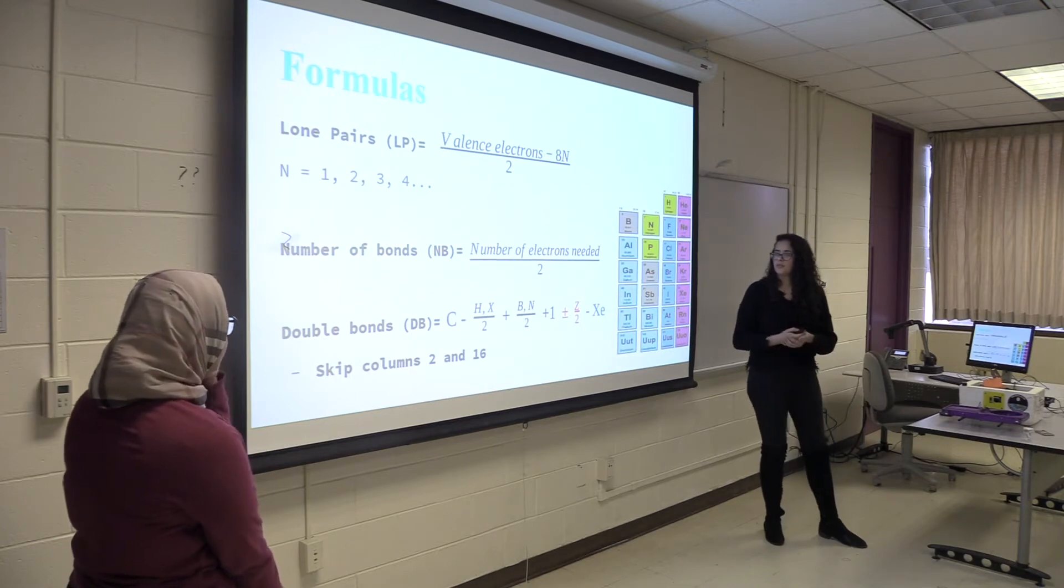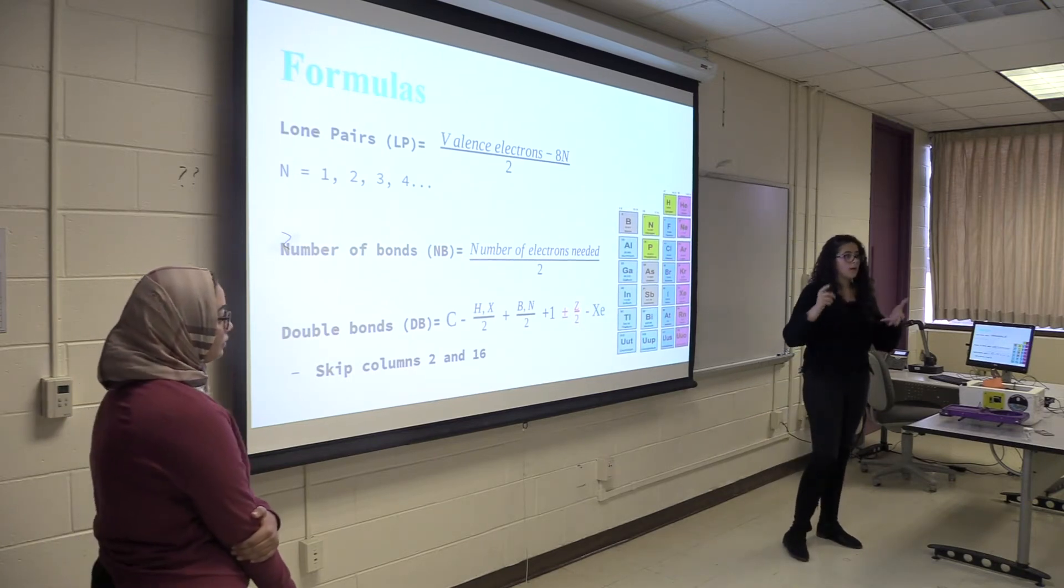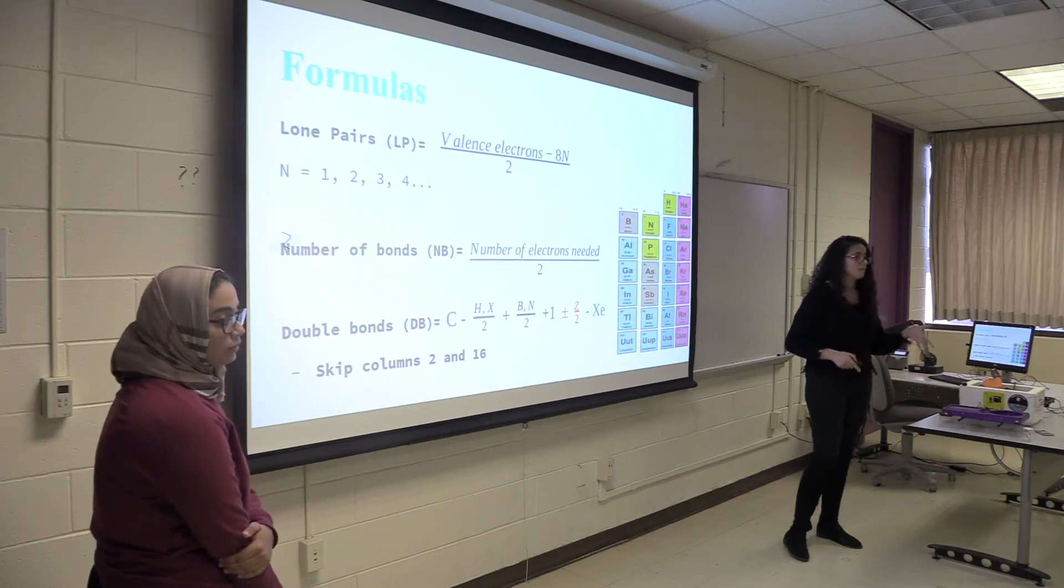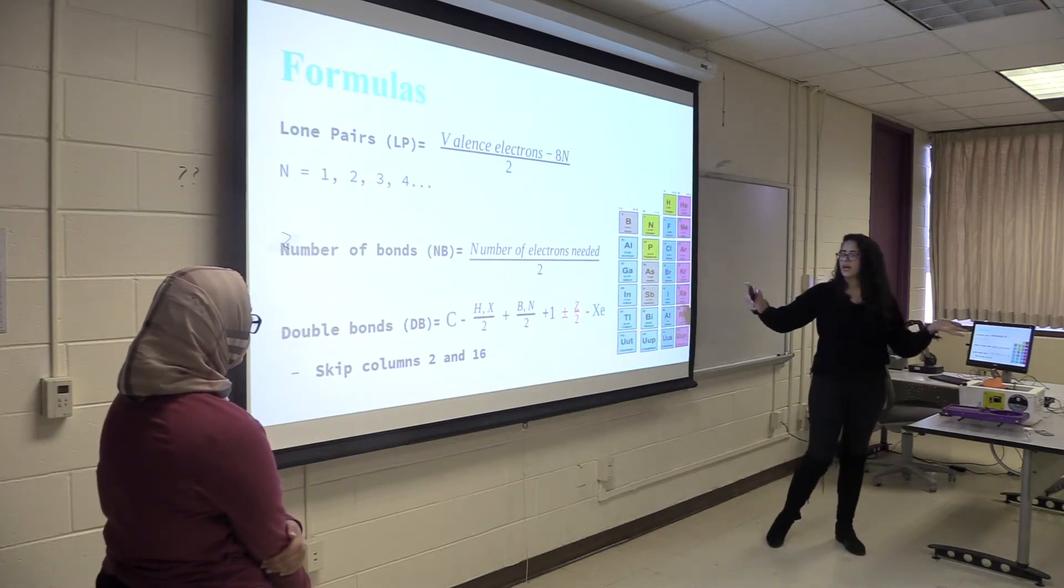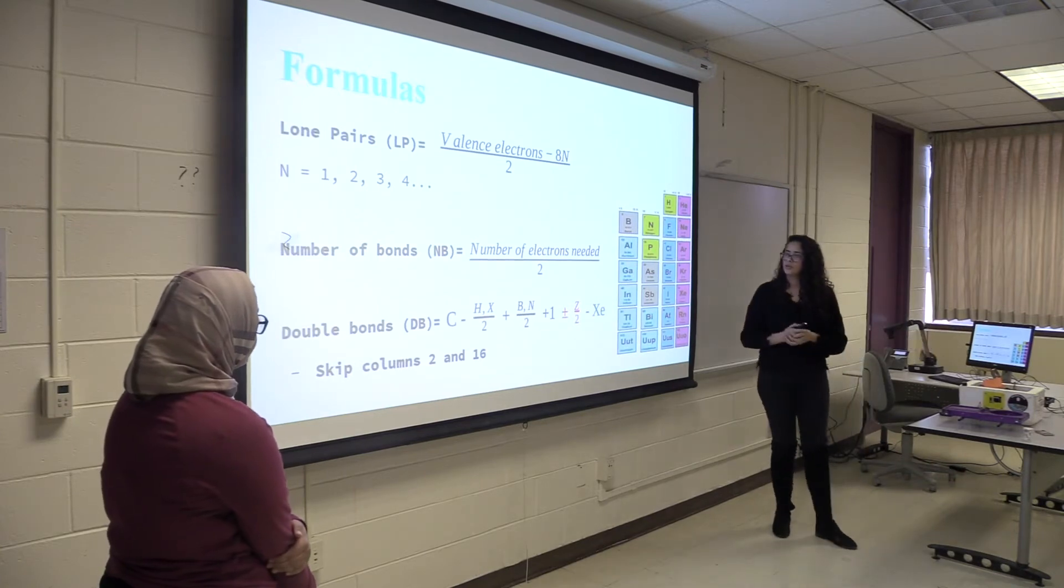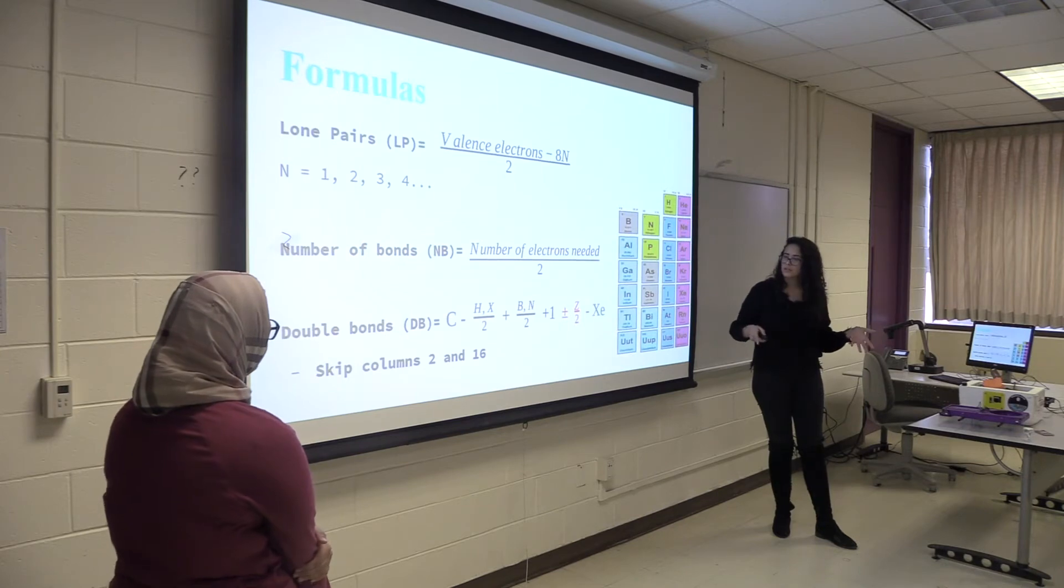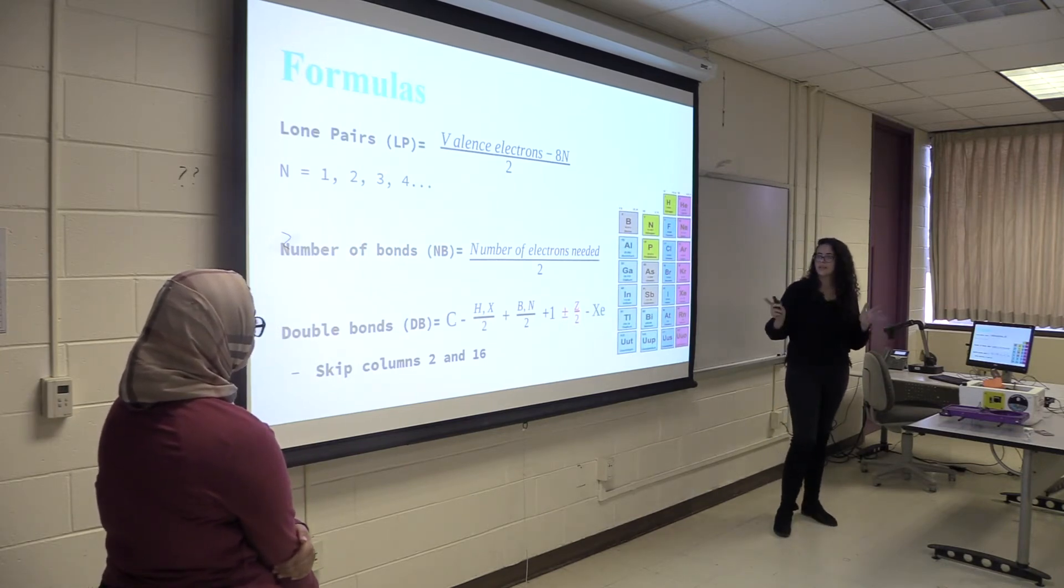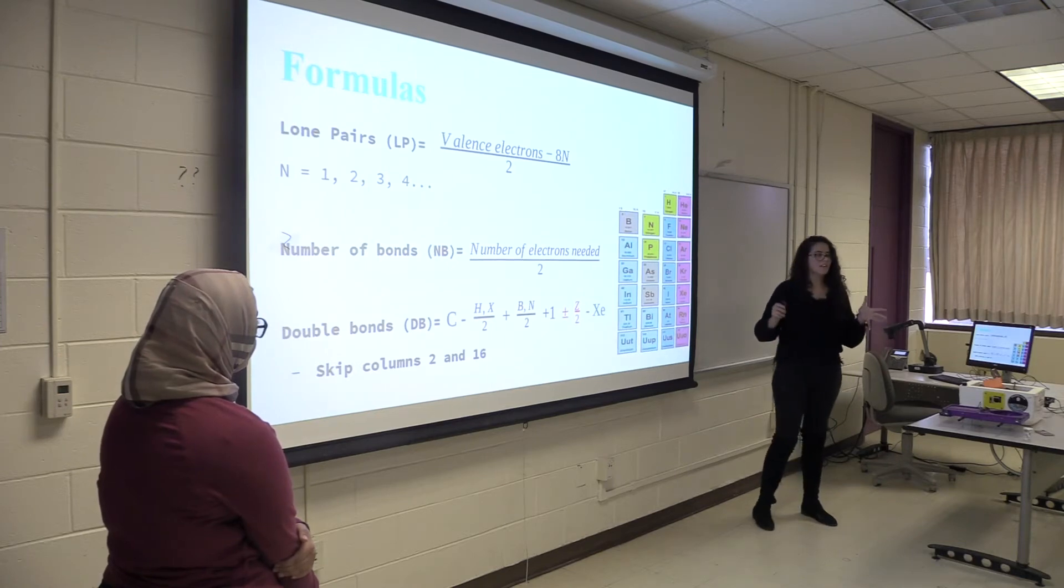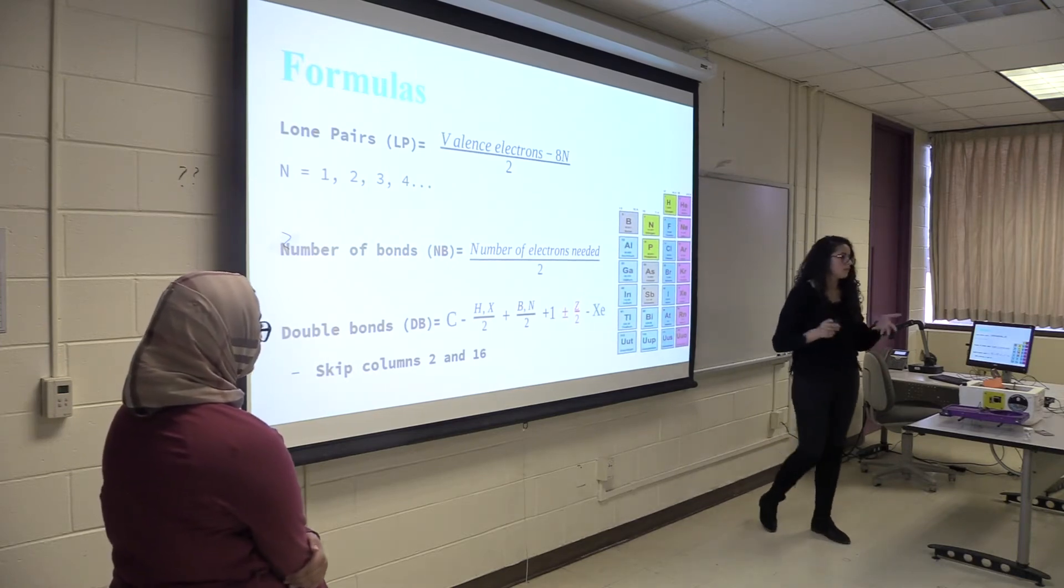And lastly the double bond equivalent formula is an already existing formula but we made our own adjustments to make it fit this approach. So you have carbon minus hydrogen and halogens divided by two plus group 3a and 5a elements divided by two plus one and plus and minus the charge divided by two minus the noble gases. I know it's like a really long formula but it's definitely worth it because this is a completely foolproof method.